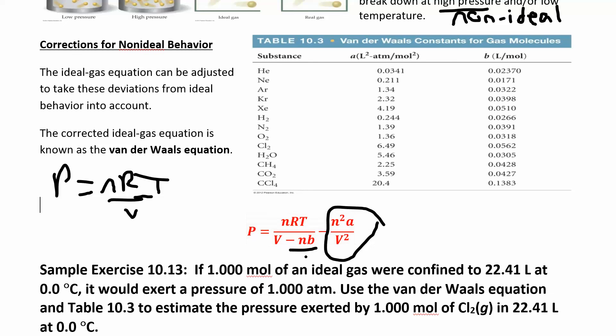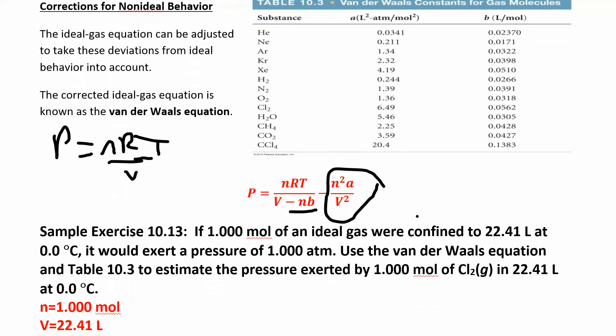At higher pressure, you have lower volume. This term is really having to do with the attractive nature of the molecules. That's why we have these different constants depending on what kind of molecule you have.